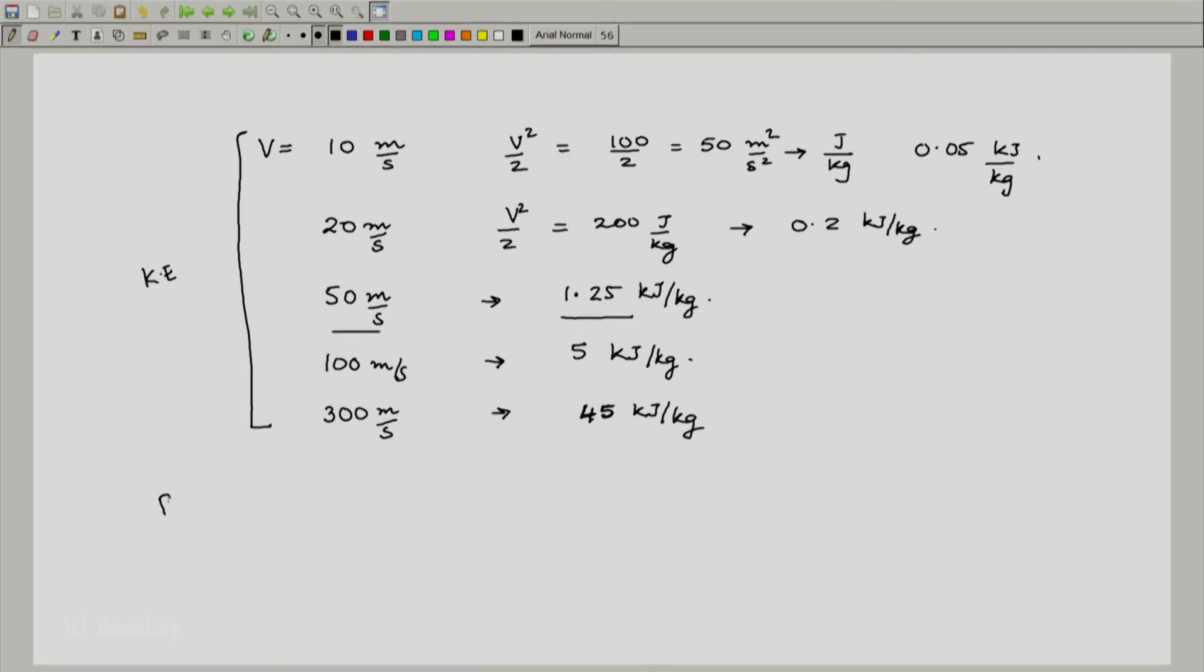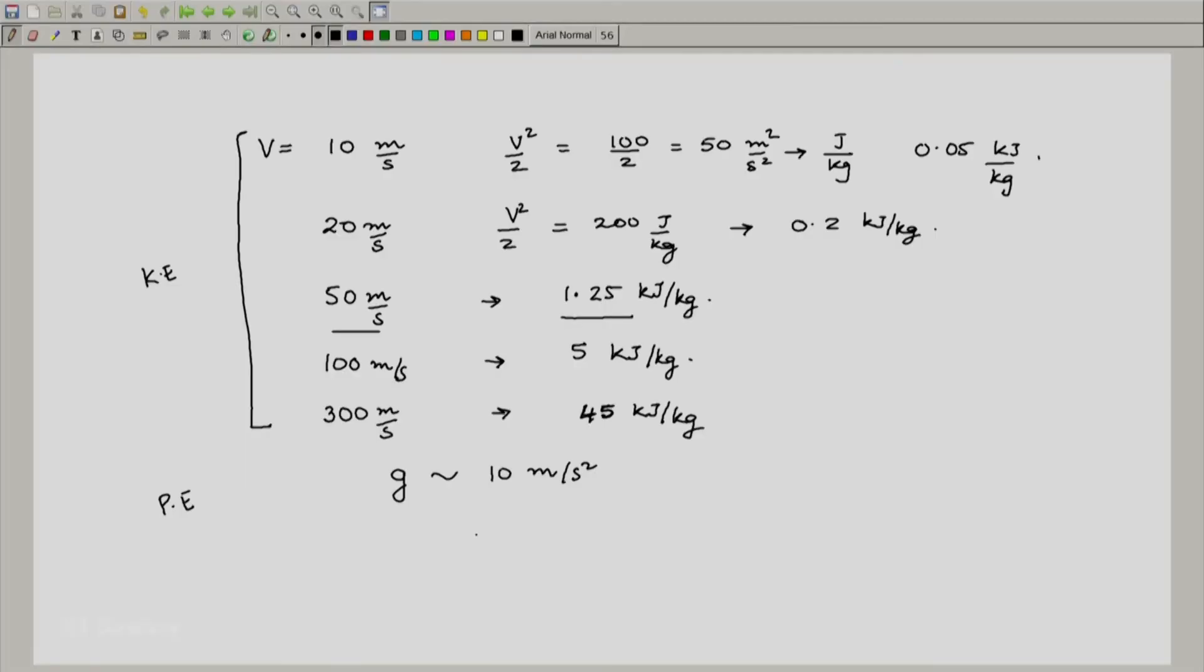Let us look at potential energy. Let me assume that g is around 10 meter per second square rather than 9.8. For turbines, compressors, and pumps, the height difference at most could start anywhere between much less than a meter to even 2, 3, 4 meters. If I take a meter as the height difference between z_e and z_i, this is g times z_e minus z_i. I could write as 10 times 1 meter. This is going to be only 10 joule per kg, which is 0.01 kilojoule per kg.